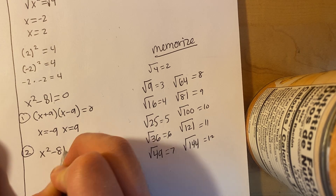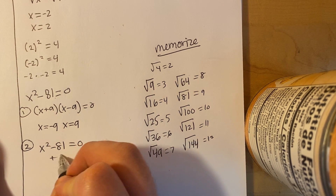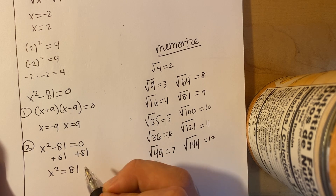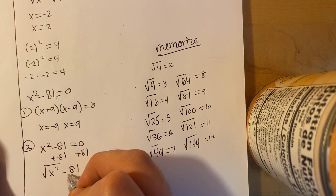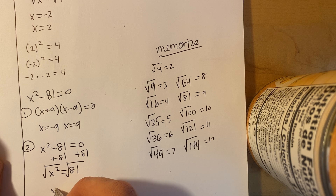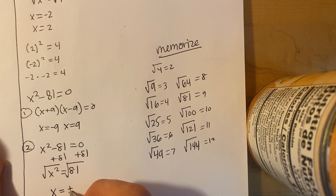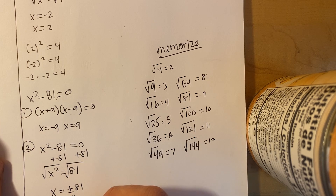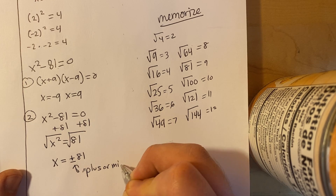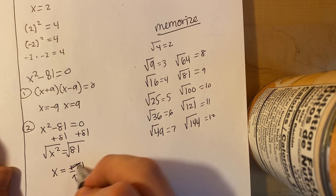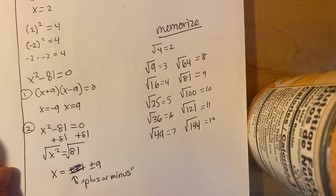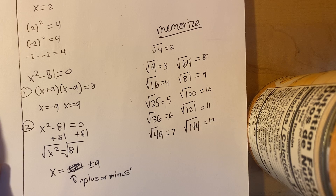The second way is using the square root method. We have x squared minus 81 equals 0. Add 81 to both sides and we're left with x squared equals 81. Take the square root on both sides. When you square root, you're going to have a positive and negative answer, so we write x equals plus or minus 9. This symbol is read as 'plus or minus.' So the answer is plus or minus 9.